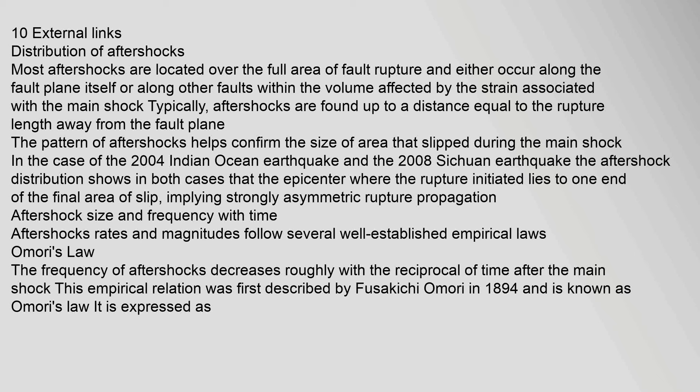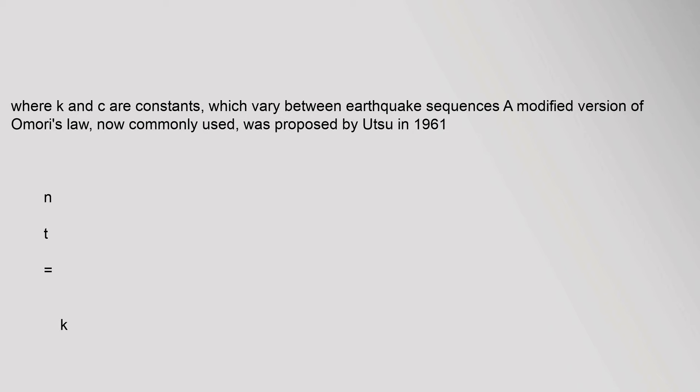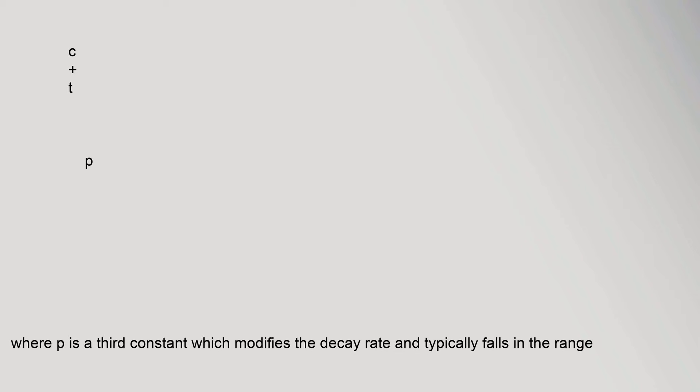Aftershock rates and magnitudes follow several well-established empirical laws. Omori's Law: The frequency of aftershocks decreases roughly with the reciprocal of time after the main shock. This empirical relation was first described by Fusakichi Omori in 1894 and is known as Omori's Law. It is expressed as N(t) = K/C+T, where K and C are constants which vary between earthquake sequences. A modified version of Omori's Law, now commonly used, was proposed by Utsu in 1961: N(t) = K/(C+T)^P, where P is a third constant which modifies the decay rate.